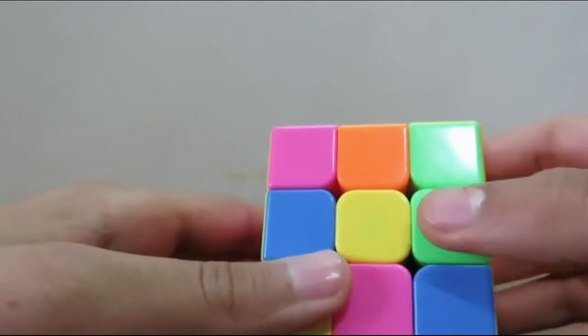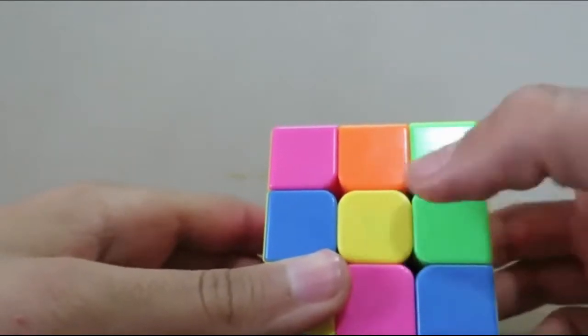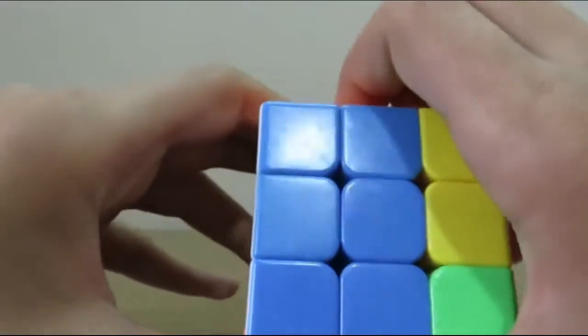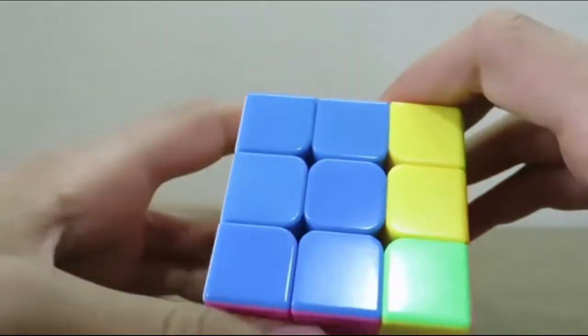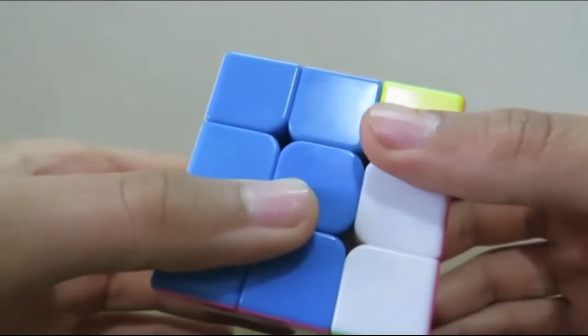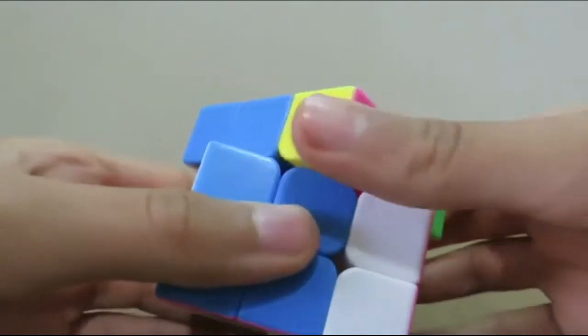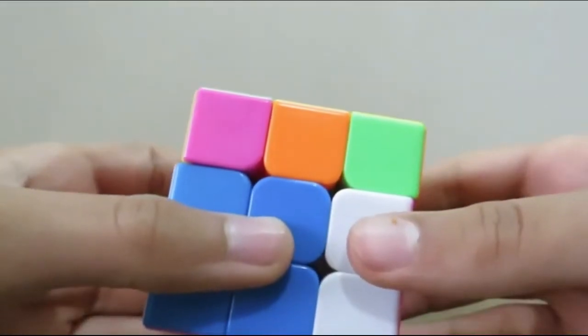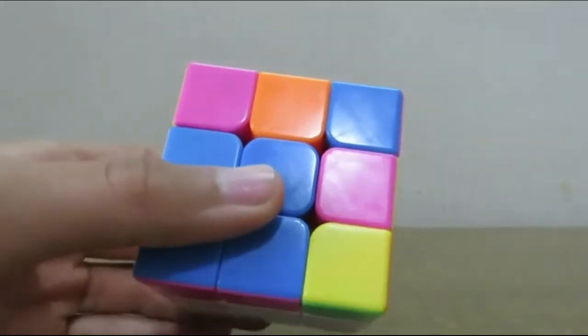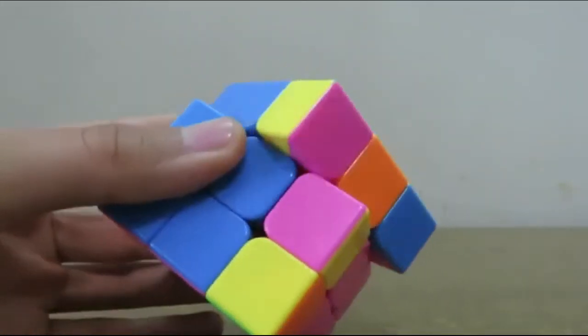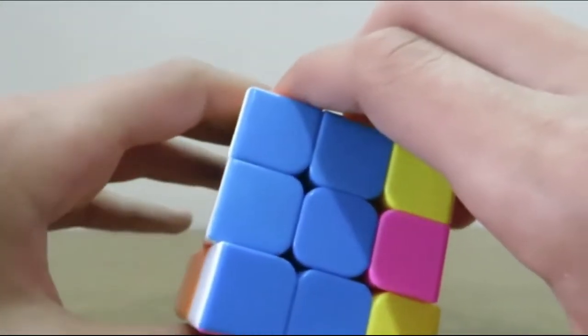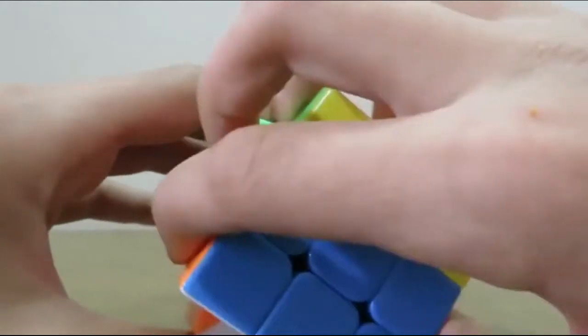One more possible scenario is when, except the center, there's no yellow edges on the yellow side. To solve this scenario we need to do the algorithm: front clockwise, right algorithm one time, and return the front.